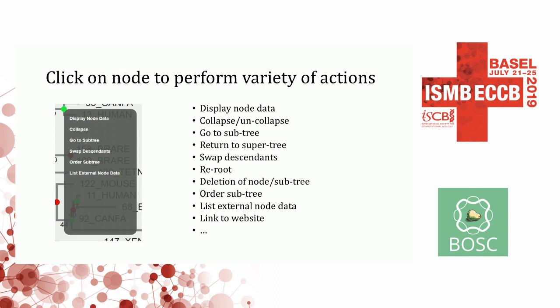You can also click on nodes and do various things, like display data on the nodes, collapse or uncollapse, go to subtrees, return to the supertree, delete a node or subtree, reroute the tree, and reorder and swap nodes. So there's quite a few things you can do here, depending on how it's configured and what data you have in the tree.